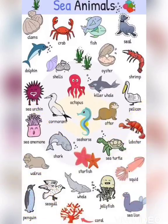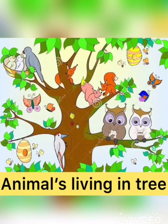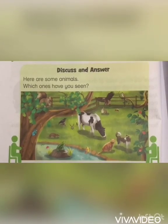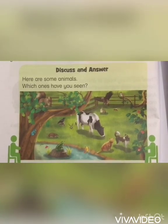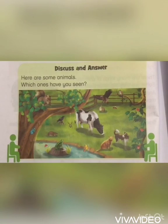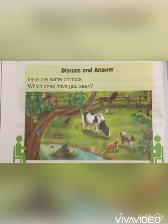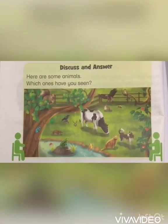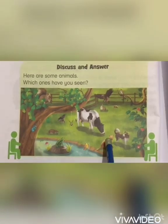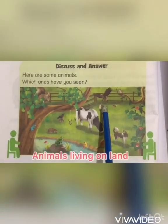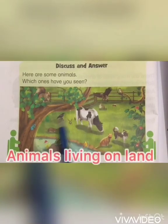Discuss and answer: here are some animals — which ones have you seen? First, we will categorize the animals that live on land: cat, dog, cow, rabbit, and mouse.